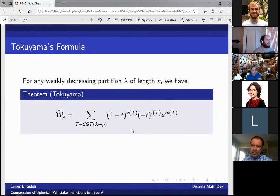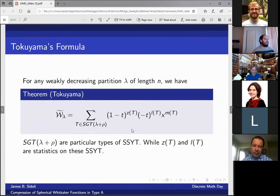We're ready to state now Tokuyama's formula. So we want to go further. We have this HHL type formula. Tokuyama's formula for the spherical Whitaker function was defined in the 1980s. And we want to try to push our HHL type formula to this Tokuyama formula. So think about SSYT of lambda plus rho as just a particular type of semi-standard Young tableau. While Z(T) and L(T) are statistics on these semi-standard Young tableaux. And we want to take a semi-standard Young tableau, group all of the HHL fillings which sort to the semi-standard Young tableau, and add them all together.